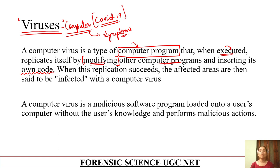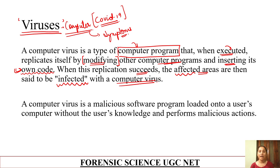When it is executed, it will modify itself according to the computer program and replicate itself. When inserted, it will insert its own code. When this replication succeeds, the affected areas are then said to be infected. For example, if there is a file on a computer, it will replicate itself in the file and create multiple viruses — we call those infected areas and infected files.